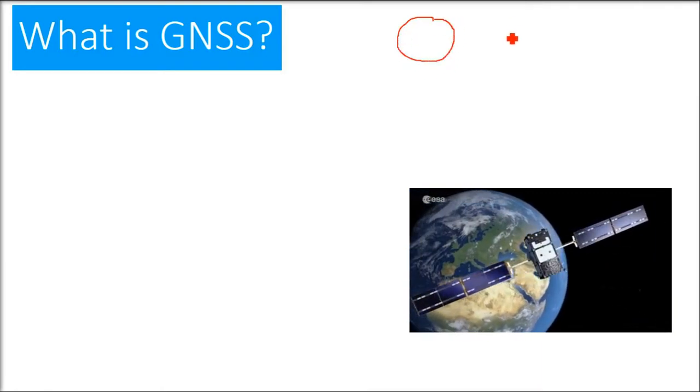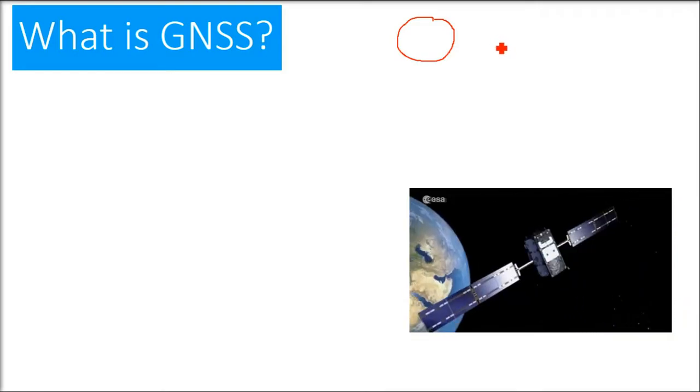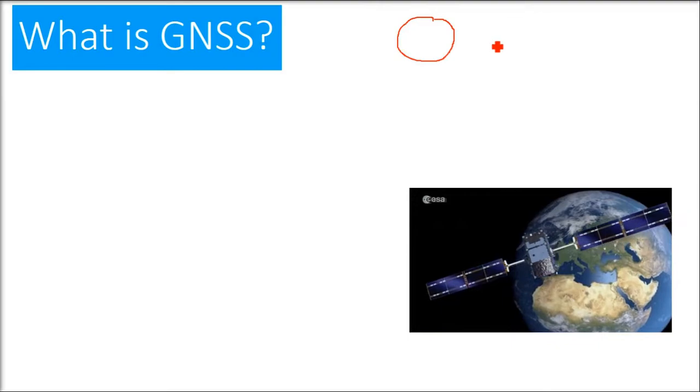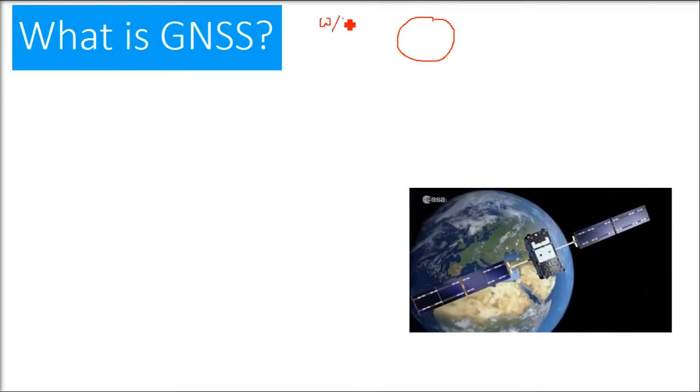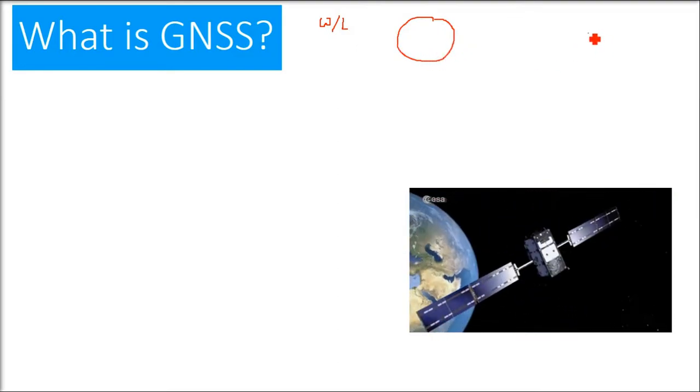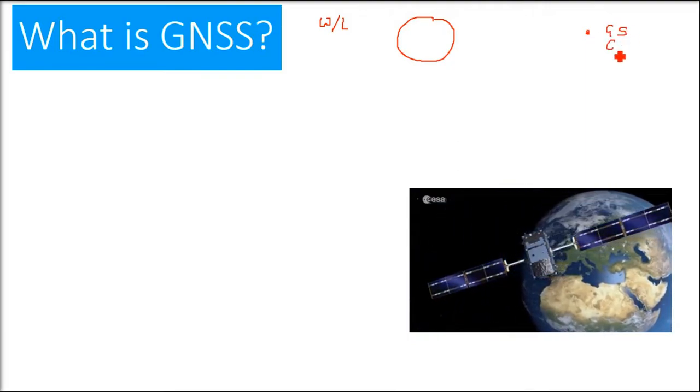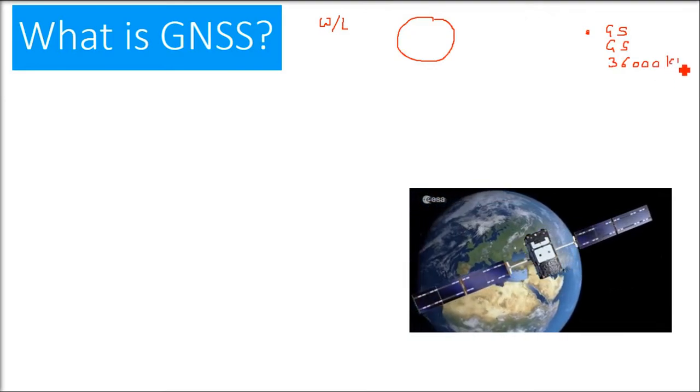This is our Earth, and at different distances satellites are flown. They are in orbit for various reasons - sometimes you want Earth observation satellites, sometimes you want location, sometimes you want weather. So at 36,000 kilometers...